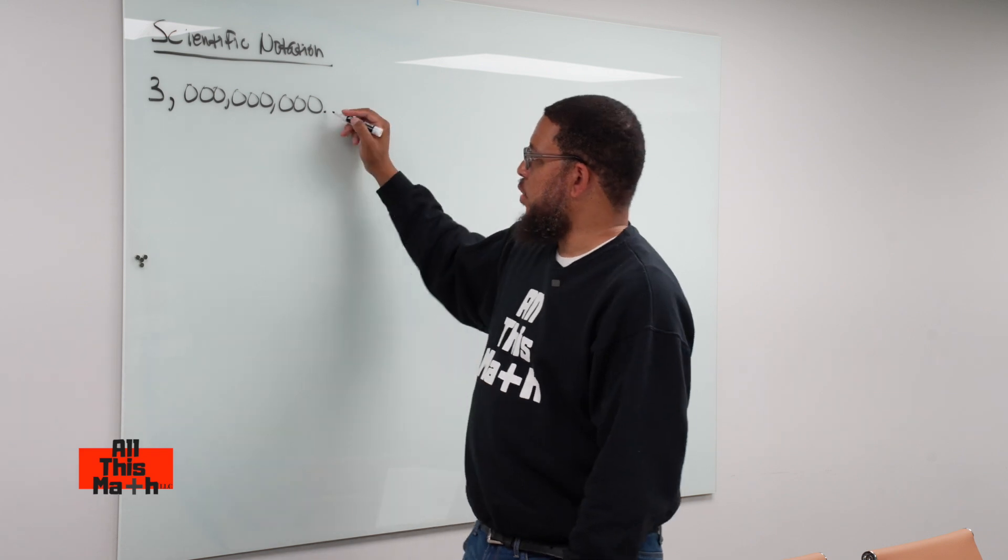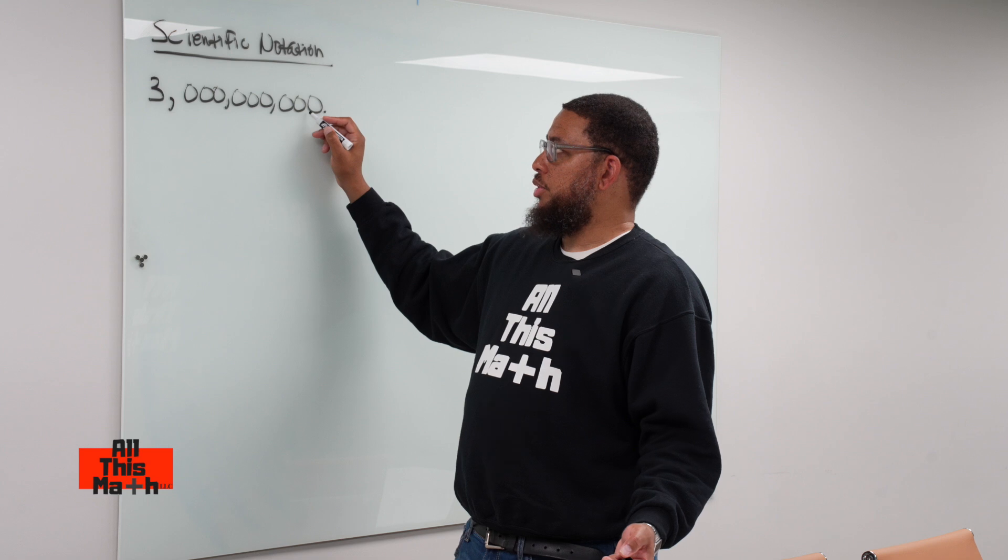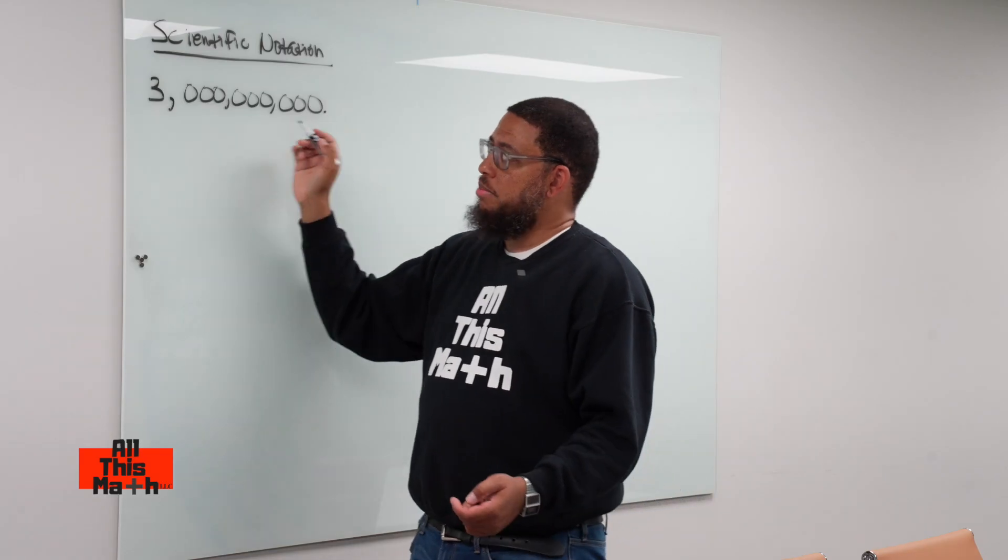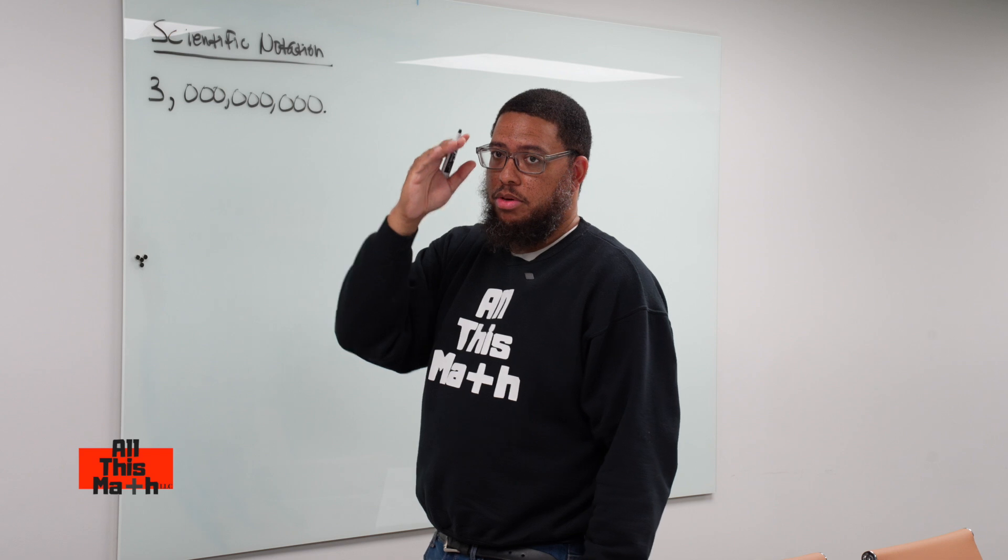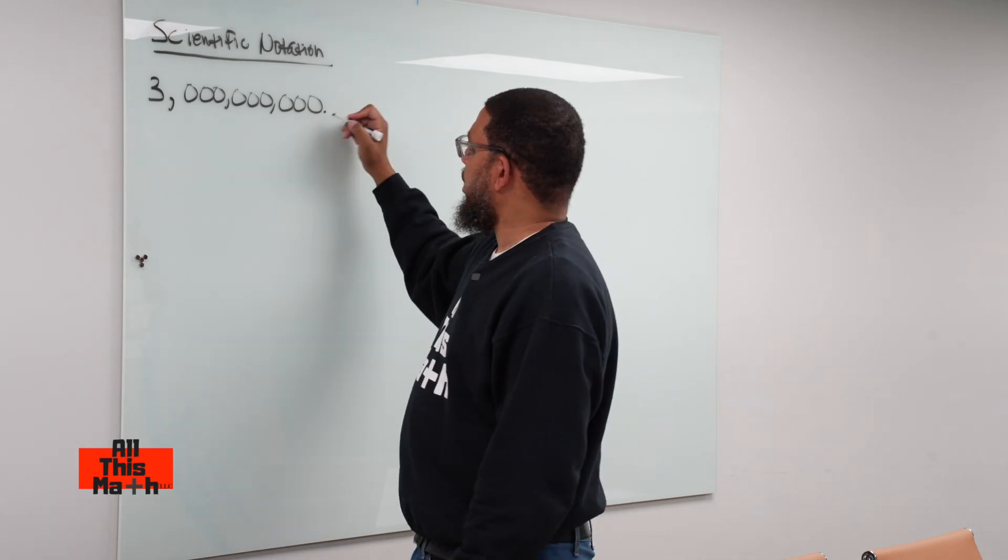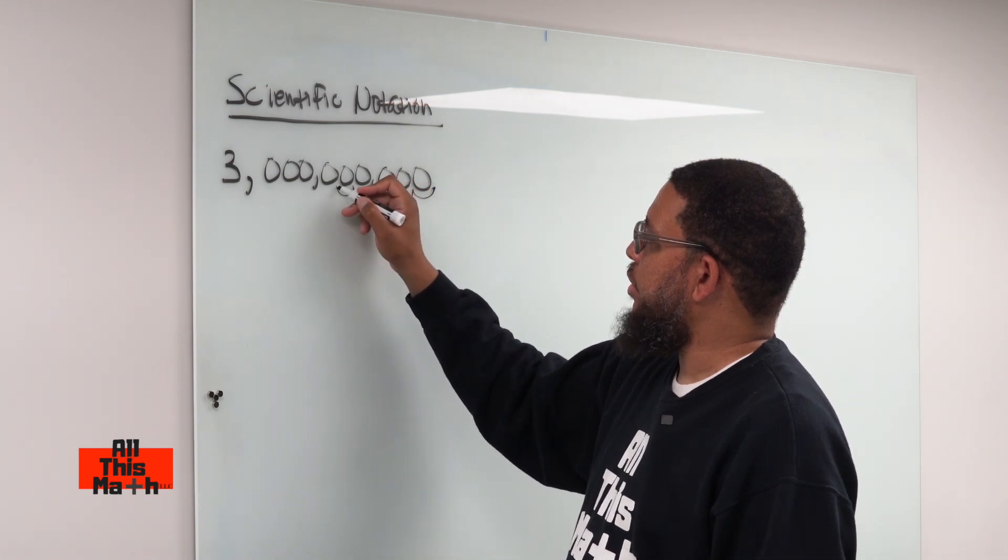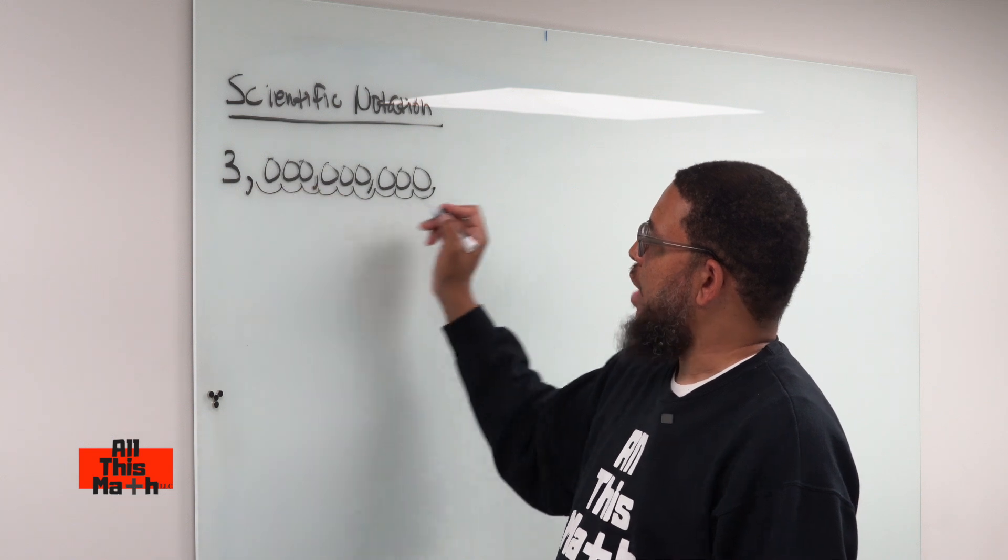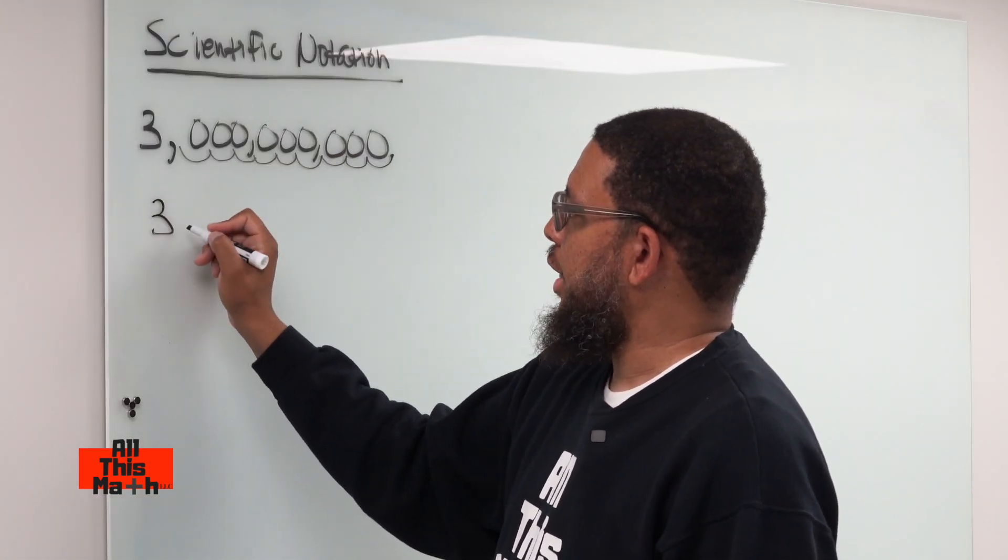So if I move it one place to the left, that number's not going to be between one and ten. That's going to be 300 million. If I move it another time, it's going to be 30 million. If I move it another time, it's going to be 3 million. I need to keep moving it until I've created a number that is one or greater, but less than ten. So I go one, two, three, four, five, six, seven, eight, nine. So if I were to move this decimal point here, now I've created a number that's between one and ten.